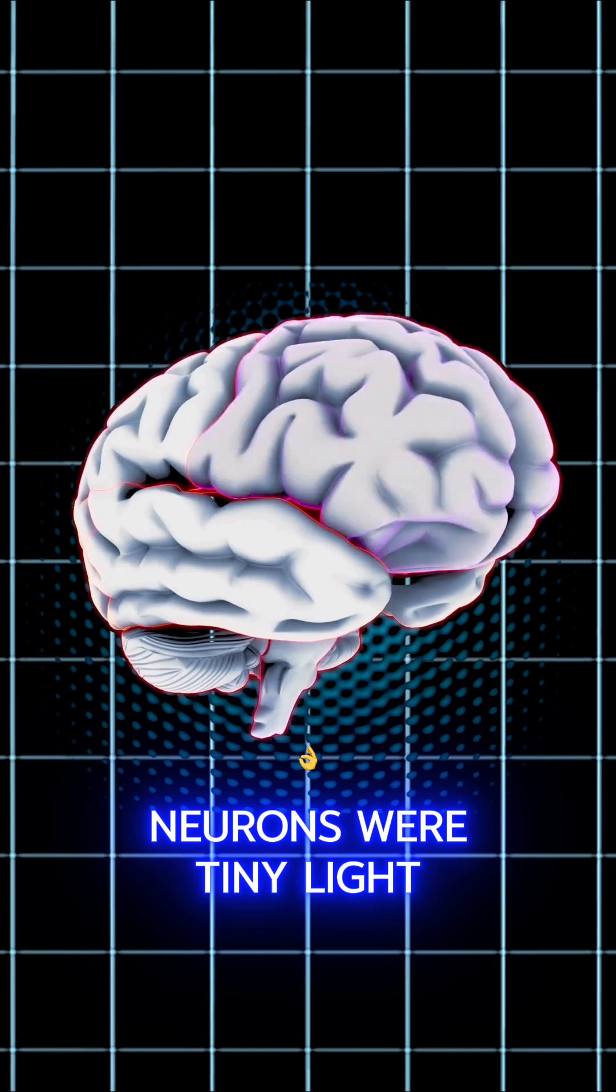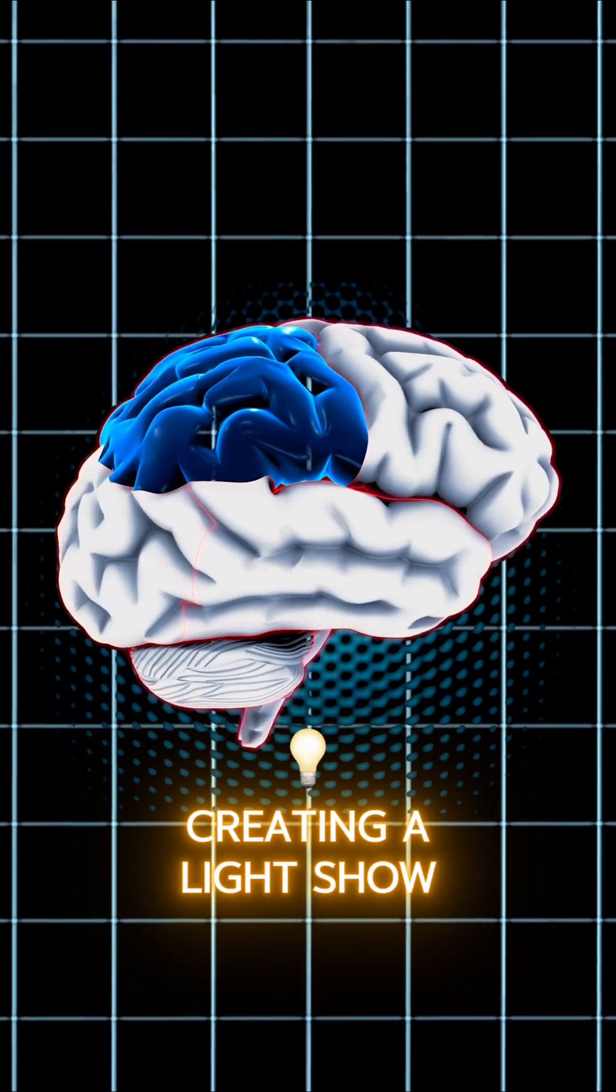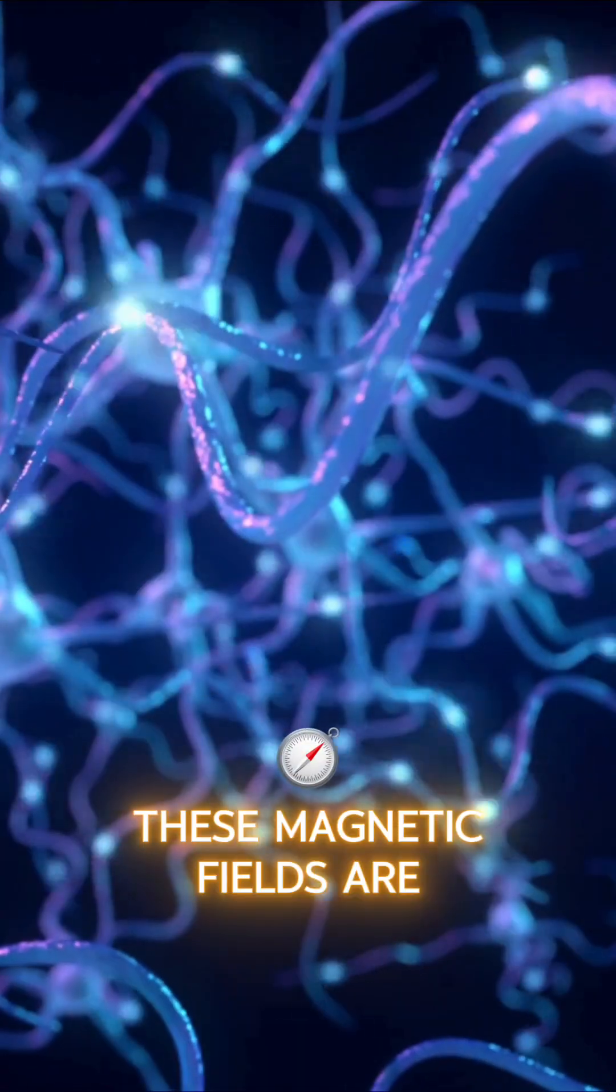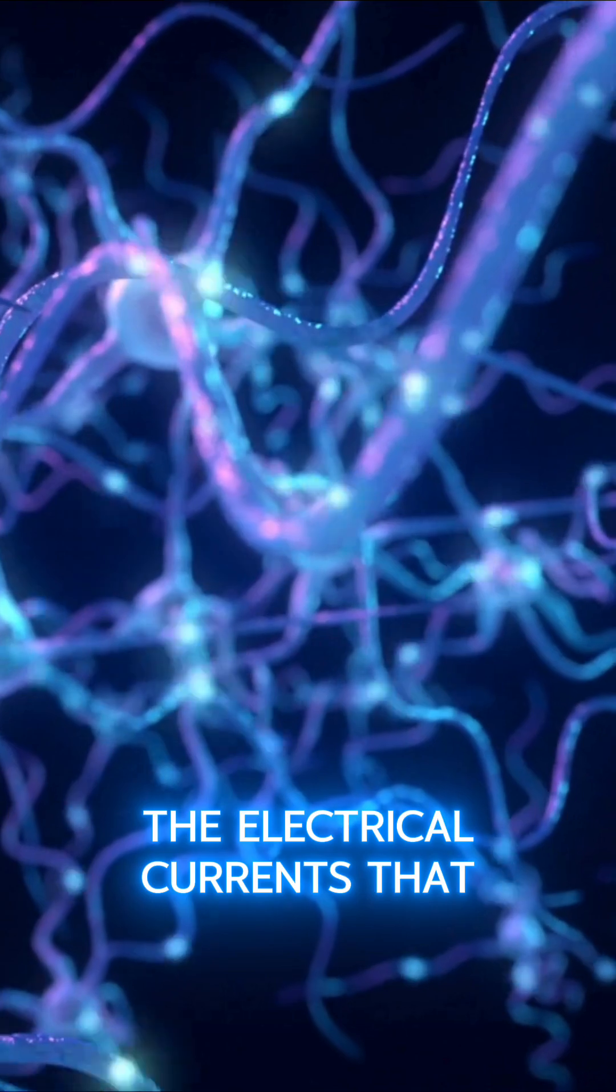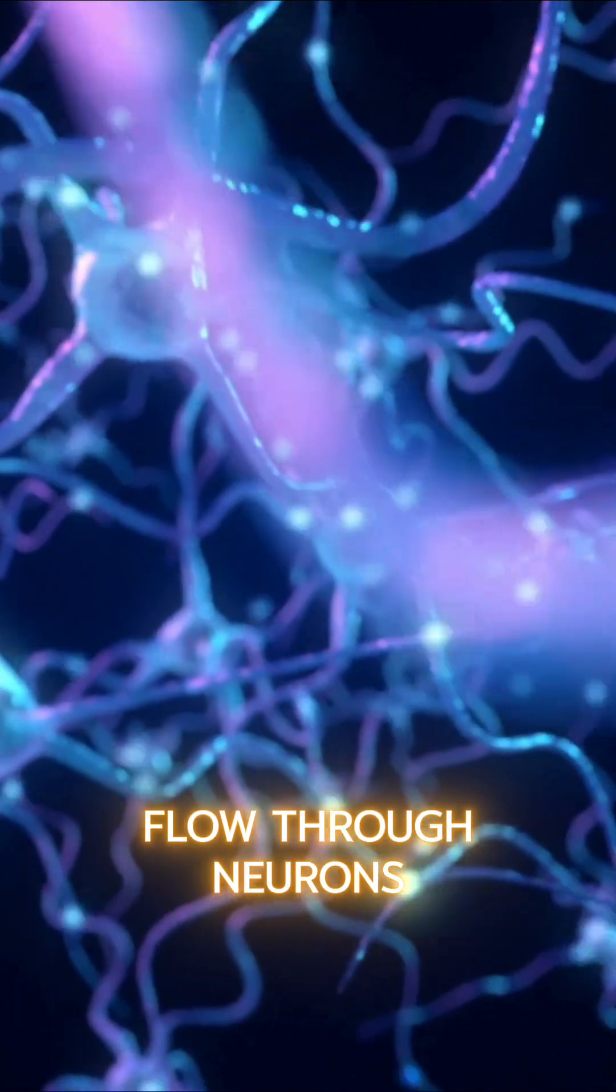It's as if our neurons were tiny light bulbs, creating a light show in our skull. These magnetic fields are generated by the electrical currents that flow through neurons during synapses.